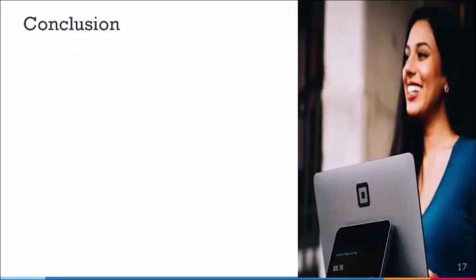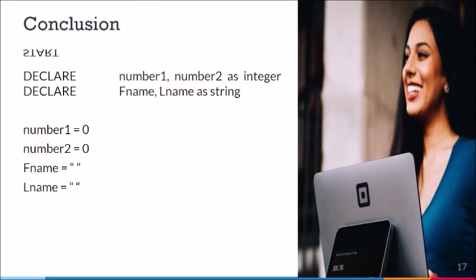In concluding this video, all of what we've looked at will be put in the order it is supposed to be aligned. Our pseudocode example starts with the start keyword to signify the beginning of execution. Then we have two lines to declare variables: the first declares number1 and number2 as integers, the second declares fname and lname as strings. The initialization section follows: number1 and number2 are both initialized to zero, and the two non-numeric variables are also initialized.